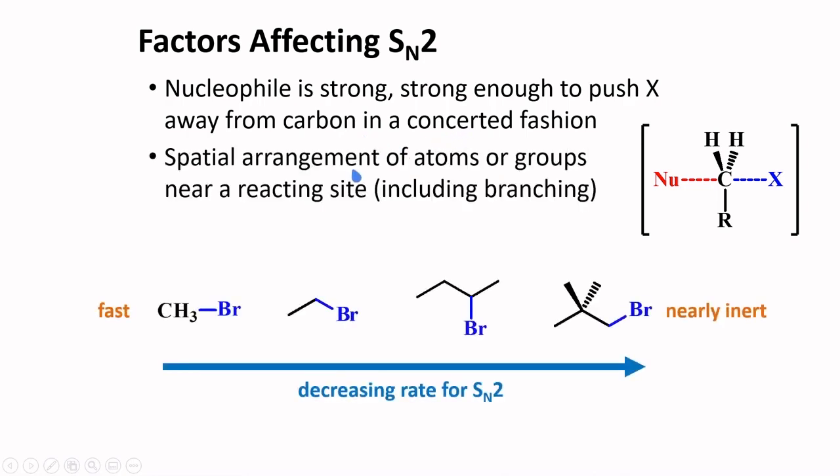Spatial arrangement of atoms or groups near the reacting site affect the rate of an SN2 reaction. Nucleophiles need to approach the backside of this carbon. And if the carbons are attached to large substituents, the reaction becomes slower. Hence, methyl bromide will react the fastest in this series. As groups attached to this carbon become larger, the rate of an SN2 reaction becomes slower. In fact, this compound here is nearly inert in an SN2 process.